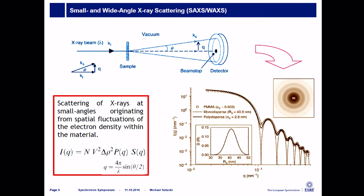How does small angle X-ray scattering work? Actually, it's a very simple technique. You have a beam, you just put your sample into this beam. In the forward direction, you place a 2D detector — either a CCD detector or a pixel detector — and there you register a 2D pattern of the scattering signal. Unfortunately, this is not a direct imaging technique, so you have scattering intensity in reciprocal space and you have to interpret your data later on.